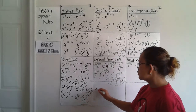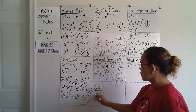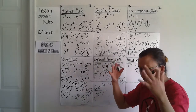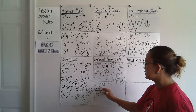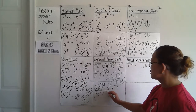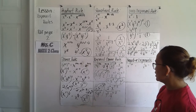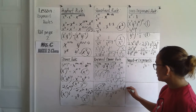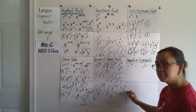Let's do a fraction example: 2x squared over 3y to the 3rd, all raised to 2. Everything inside the parentheses receives the exponent 2. 2 squared is 4, x squared times 2 is x to the 4th, 3 squared is 9, y to the 3rd times 2 is y to the 6th. Answer: 4x to the 4th over 9y to the 6th.